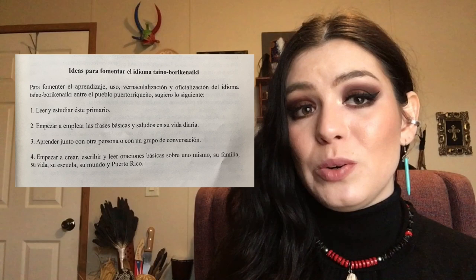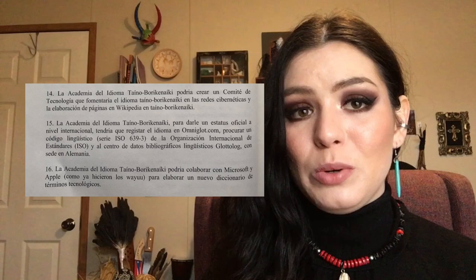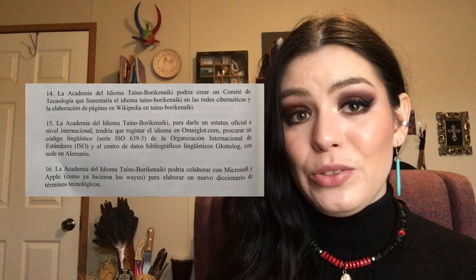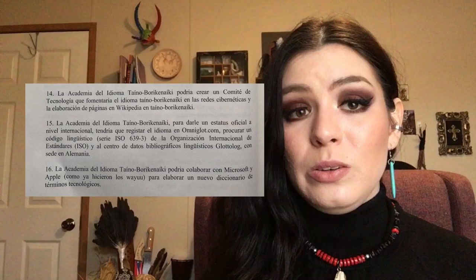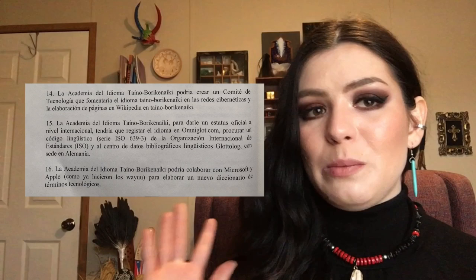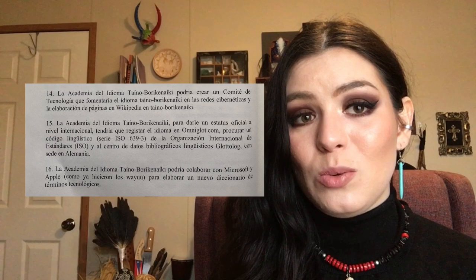He includes a page of 16 suggestions for promoting the Taino language, including forming a committee to add Taino Burika Naiki to Wikipedia, registering the language internationally through omniglot.com using the ISO 639-3, and collaborating with Microsoft and Apple to add this language as they did with others. The book is also poorly organized with vocabulary — it didn't list conjunctions for essential words in lesson 14 and has a few Spanish writing errors. Extrapolate from that what you will.